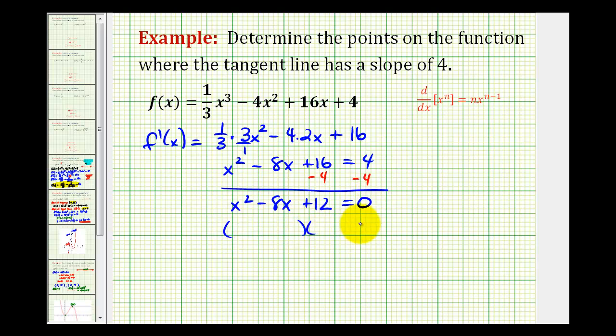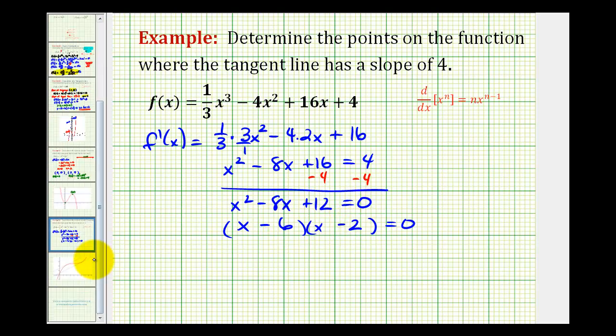This is factorable. We want the factors of positive 12 that add to negative eight. That'll be negative six and negative two. So the solutions to this equation are x equals six and x equals two.